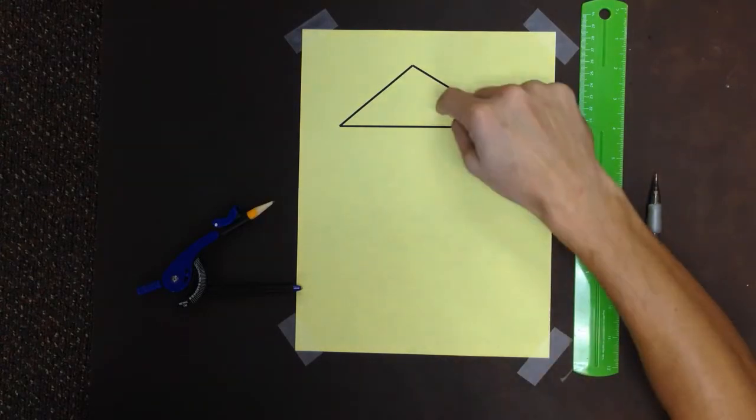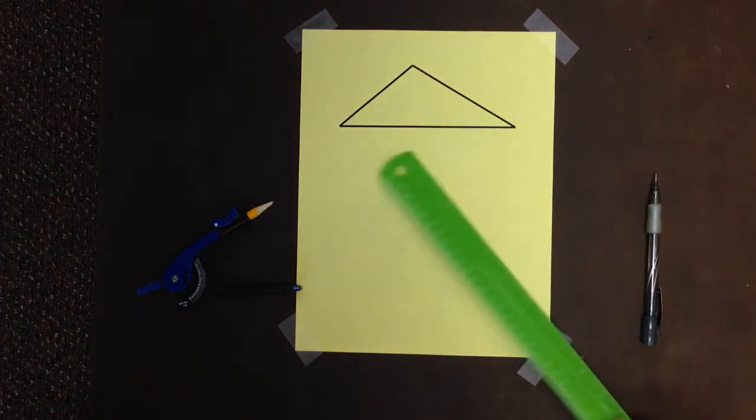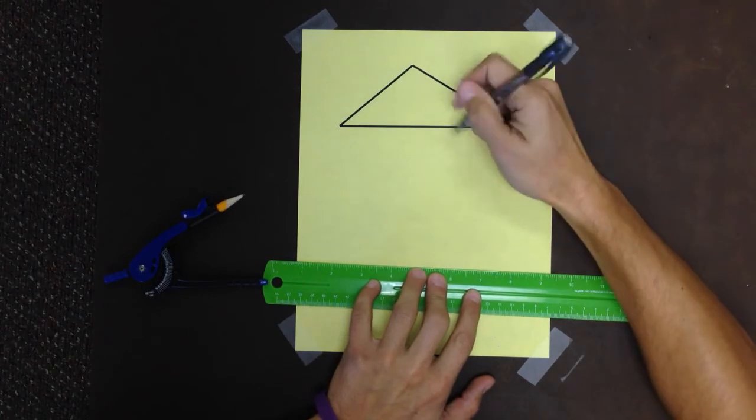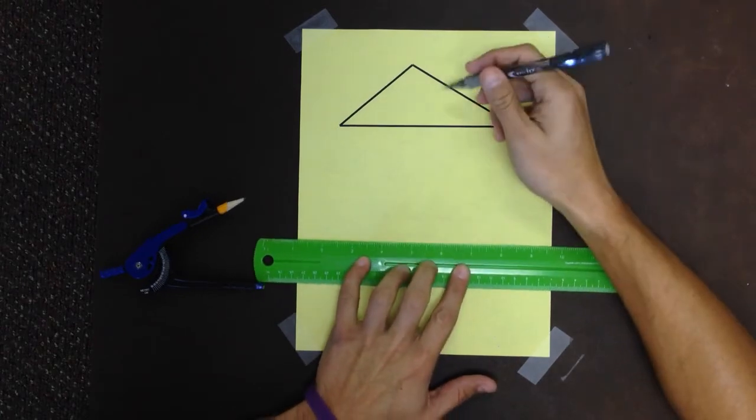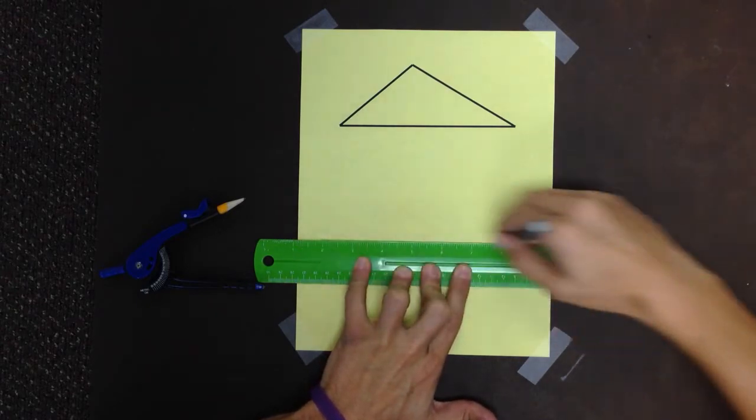If I'm going to construct a triangle that's congruent to that one, I should start off with some sort of a side. I'm going to draw a line, and eventually I want it to be representative of this one down here. I'm going to draw a big line just to make sure I have something to start with.